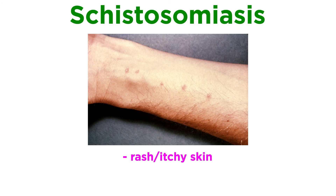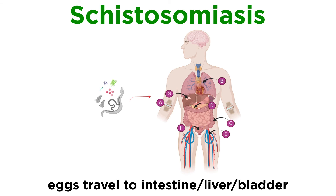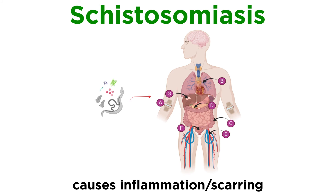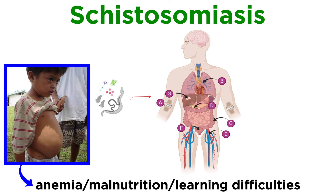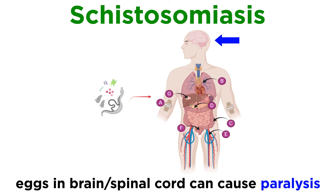Individuals who are infected develop a rash or itchy skin. Fever, chills, cough, and muscle aches can begin within one to two months of infection. Eggs that are produced usually travel to the intestine, liver, or bladder, causing inflammation or scarring. Children who are repeatedly infected can develop anemia, malnutrition, and learning difficulties. After years of infection, the parasite can also damage the liver, intestine, lungs, and bladder. In some cases, eggs are found in the brain or spinal cord and can cause seizures, paralysis, or spinal cord inflammation.